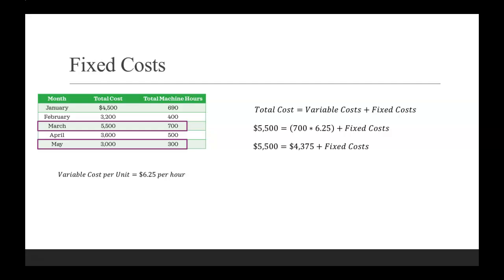Well, your variable costs will come out to $4,375. We then subtract that from our total cost. We just defined our fixed costs to be $1,125.